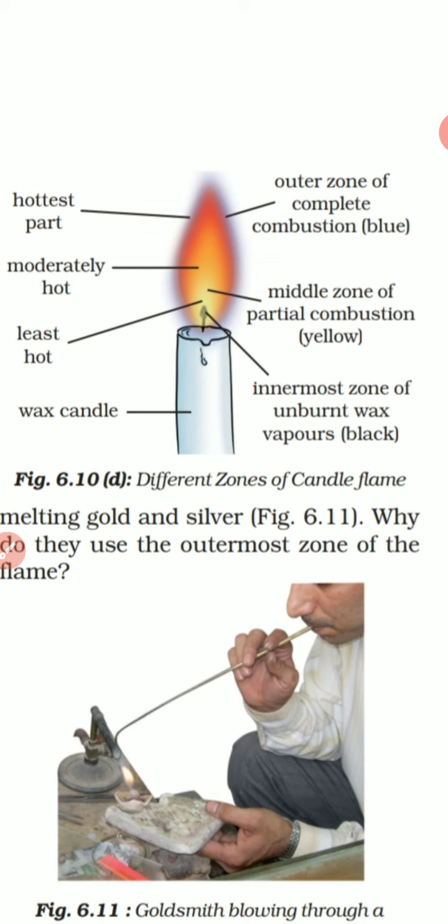To summarize: the outermost zone is blue, with complete combustion, and is the hottest part. The middle zone is yellow, with partial combustion, and is moderately hot. The innermost zone has unburnt wax, no combustion, and is the least hot. These are the zones making up the structure of a flame.